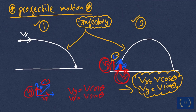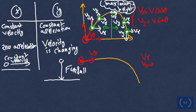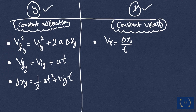To recap: projectile motion follows a trajectory, and we have two cases — case one releases something horizontally and it follows a curved path downward, while case two launches something at an angle reaching a maximum height then falling down. Projectile motion combines two separate motions: constant velocity in the x direction with zero acceleration, and constant acceleration in the y direction due to gravity. For x, we use one formula: speed equals distance over time. For y, we use the three equations of motion under constant acceleration.